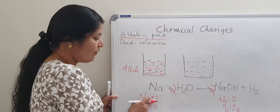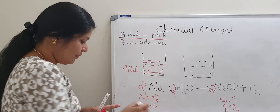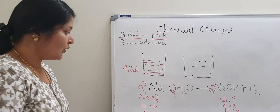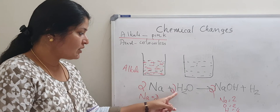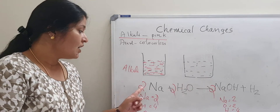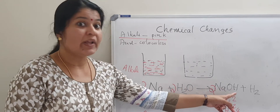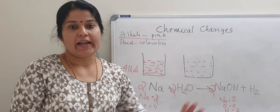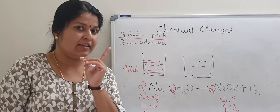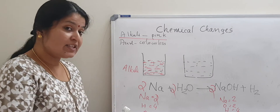The balanced chemical equation is: 2Na + 2H₂O → 2NaOH + H₂. Sodium plus water gives sodium hydroxide plus hydrogen. Sodium hydroxide is a strong alkali.